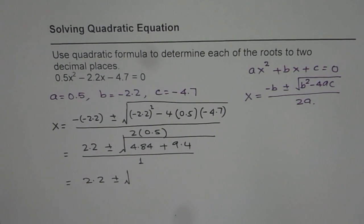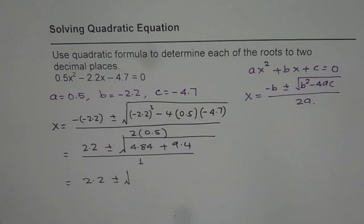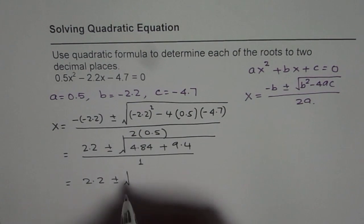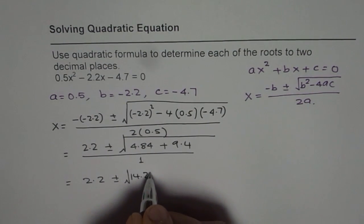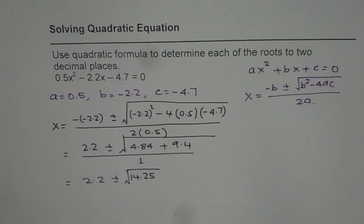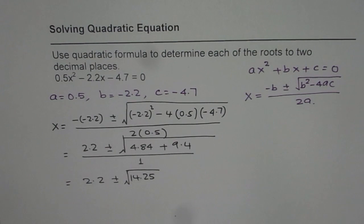Let us add them up: 4.84 + 9.4 = 14.24. Now find the square root of 14.24.